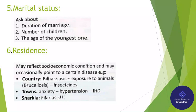5. Marital state: ask about duration of marriage, number of children, and the age of the youngest one. 6. Residence may reflect socioeconomic condition and occasionally points to certain diseases — e.g., country areas: bilharziasis, exposure to animals causing brucellosis, insect bites. Towns: anxiety, hypertension, IHD. Sharkia: filariasis.